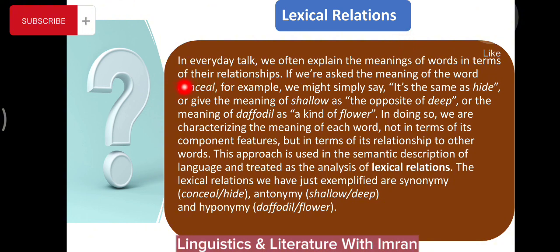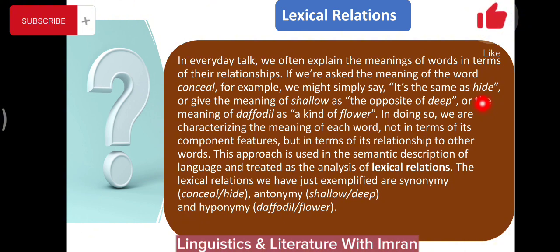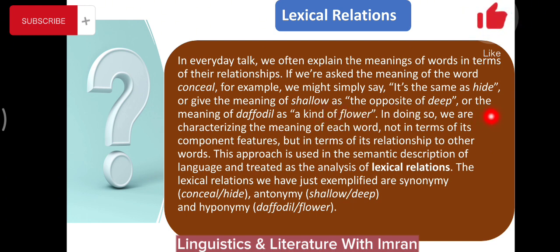In everyday talk, we often explain the meaning of words in terms of their relationships. If asked the meaning of the word 'conceal', we might say it is the same as 'hide' — this technique is known as synonymy. Or we give the meaning of 'shallow' as the opposite of 'deep' — this is antonymy. Or the meaning of 'daffodil' as a kind of flower, where the meaning of 'daffodil' is included in the meaning of flower — this is hyponymy.